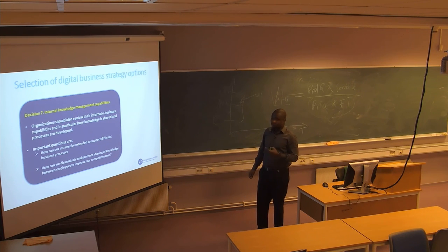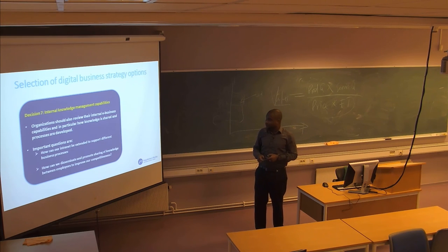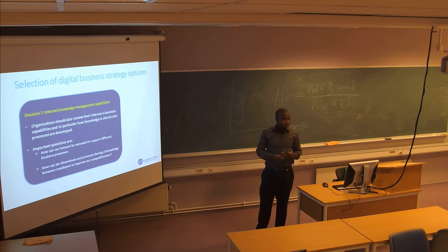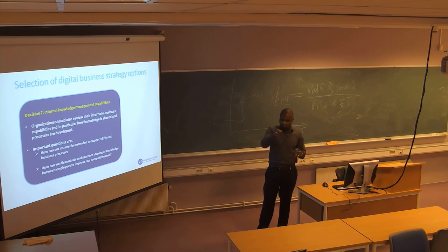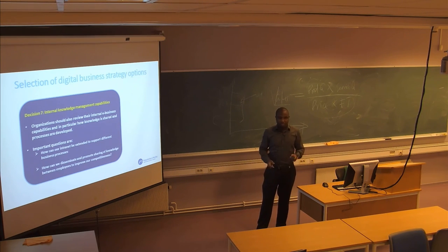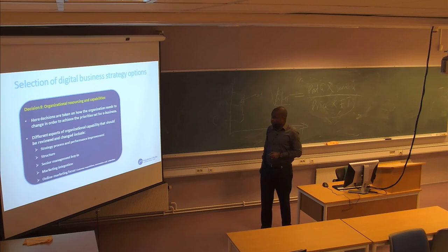Decision number seven is internal knowledge management capabilities. Knowledge is a core resource for most organizations. You need to make choices on how you manage the knowledge resources your organization has — how you can extend the internal network to facilitate knowledge sharing among different functional areas, and whether you can disseminate and promote knowledge sharing between employees to improve competitiveness and enhance value creation.